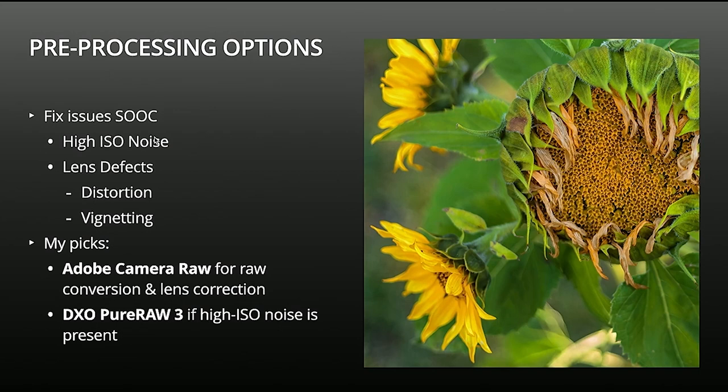However, if I have images shot at ISO 3200 and above — anything I want to share, might want to print, or may even make it into my portfolio — that's where I'll start with something like DxO Pure RAW 3. On a need-by-need basis, because it does take time to process, I'll throw those images into DxO, and it does devignetting, distortion correction, and fixes the noise on the RAW file. It can then spit out a TIFF or DNG depending on your preference, and then you can continue with your creative editing.